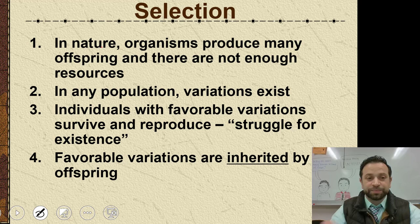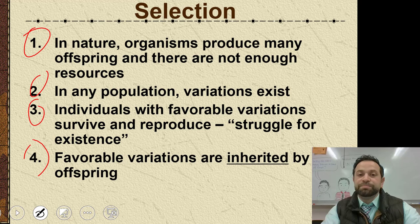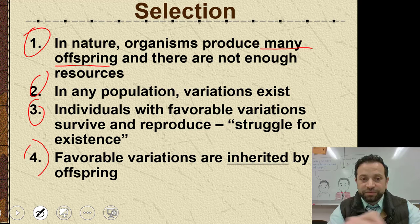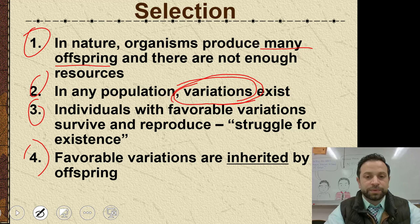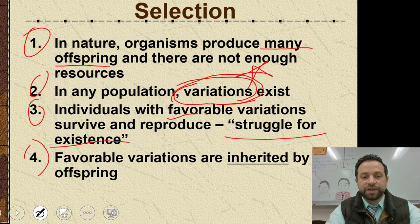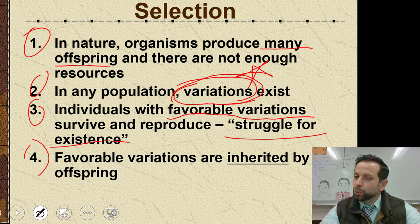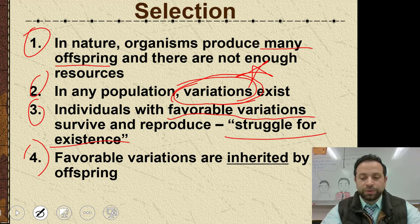Here are four components of natural selection. First, in nature, organisms produce many offspring, and there aren't always enough resources. Second, in any population, variations exist — think about where variation comes from, remember crossing over? Individuals with favorable variations survive and reproduce, and this is what we call the struggle for existence. What determines whether a variation is favorable or not? It is the environment. And last but not least, favorable variations are inherited by offspring. So if you have a long neck as a giraffe, you're going to pass on that long neck to your offspring.